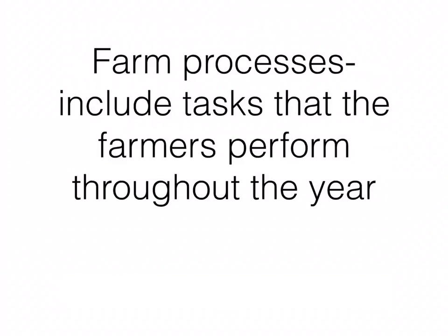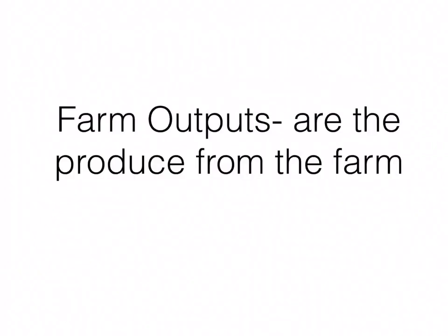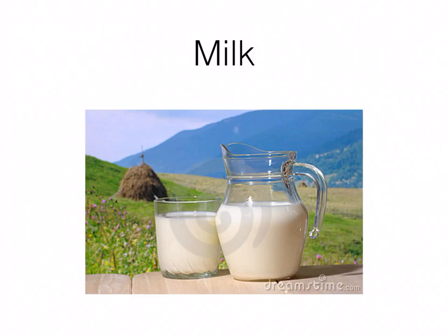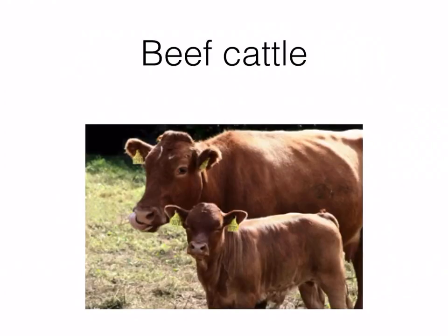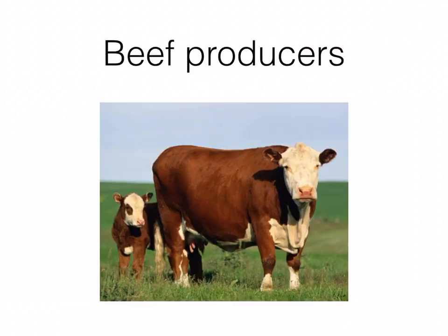Farm processes are what the farmer is doing from one end of the year to the next depending on the season - it could be milking the cows, spreading fertilizer, or cutting the silage. Farm outputs are what leaves the farm or what the farmer produces. He could be growing vegetables and selling them to the market, sending milk to the co-op or dairy, or selling beef cattle to the market or local abattoir - same with sheep.